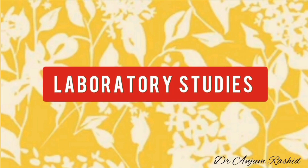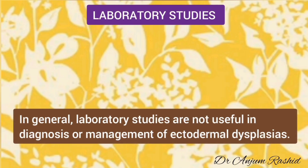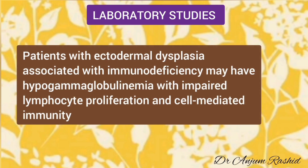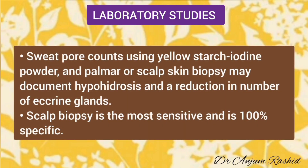Regarding laboratory studies: in general, they are not useful in the diagnosis or management of ectodermal dysplasia. However, patients with ectodermal dysplasia associated with immune deficiency may have hypogammaglobulinemia with impaired lymphocyte proliferation and cell-mediated immunity. Sweat pore counts using yellow starch-iodine powder and palmar or scalp skin biopsy may document hypohydrosis and a reduction in the number of eccrine glands. Scalp biopsy is the most sensitive and is 100% specific.